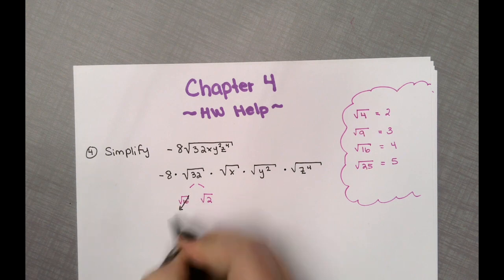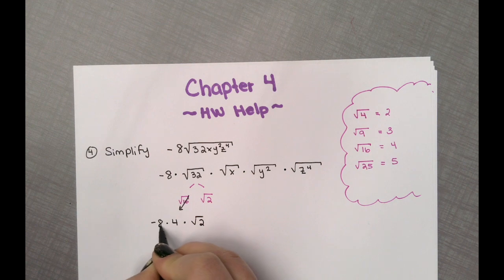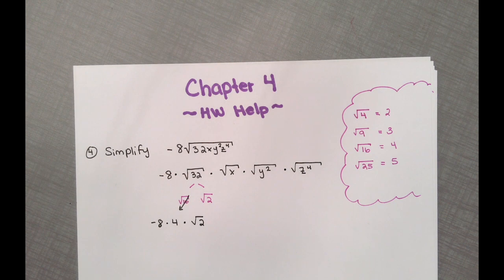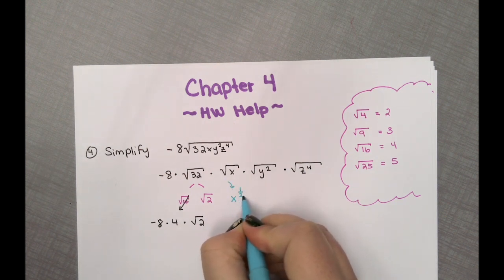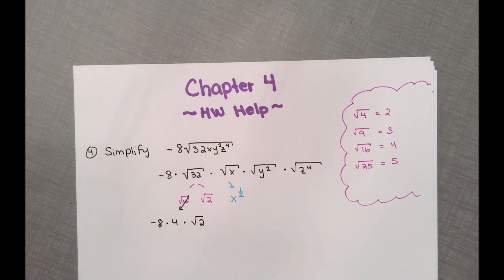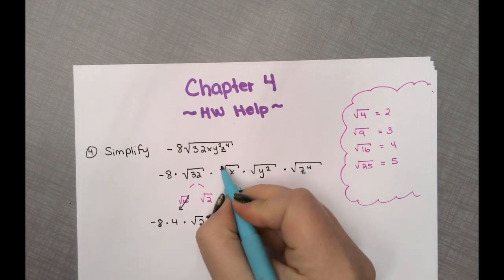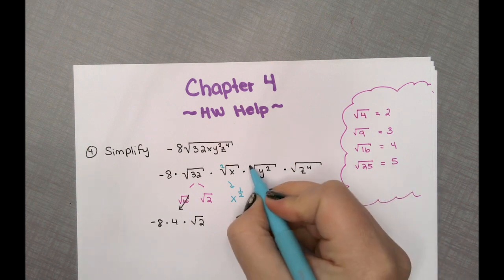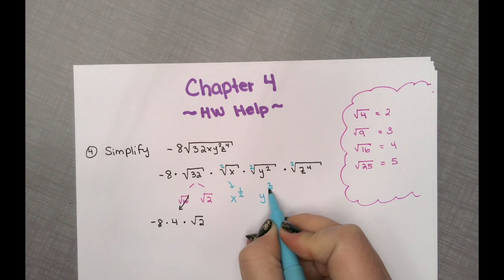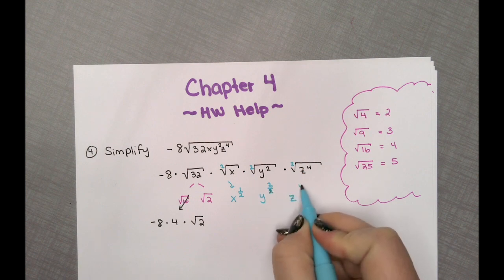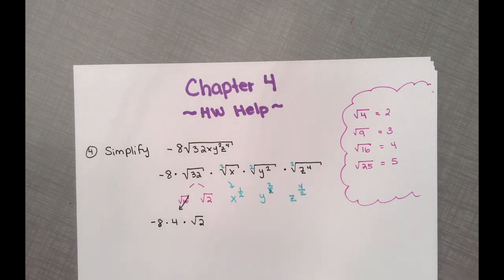Simplifying that out, we have negative 8 times 4 times the square root of 2, and we still have the variables. I like to rewrite these as a rational exponent — a fraction exponent. The denominator of 2 comes from the index. To me it's a little bit easier to see how I can simplify with a fraction exponent. For example, x to the one-half cannot be simplified because 1/2 cannot be reduced.